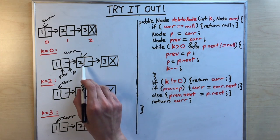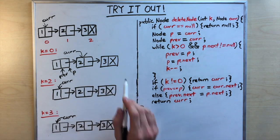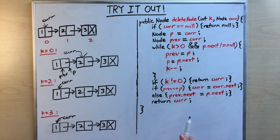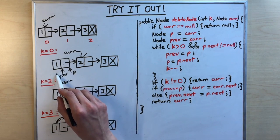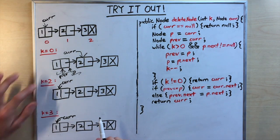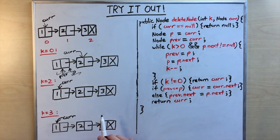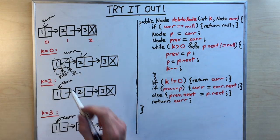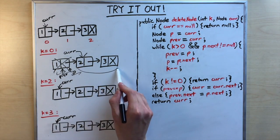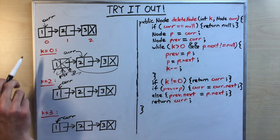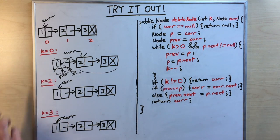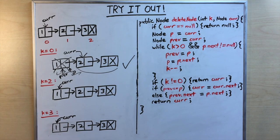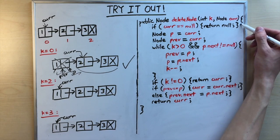After the method finishes, Java discards the temporary pointers. Nothing points to the old first node so Java destroys it. We're left with the two-node linked list — exactly what we wanted. That's one for three.